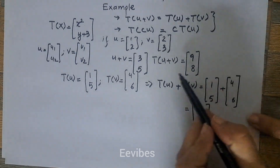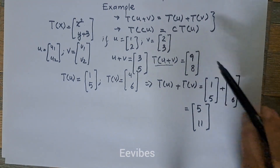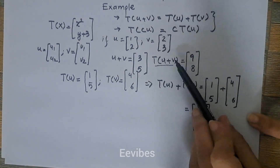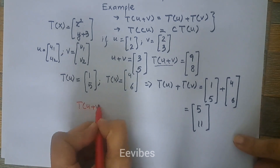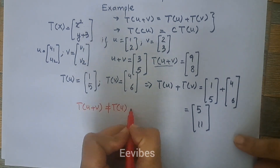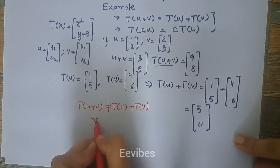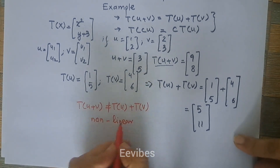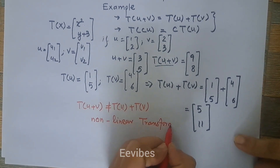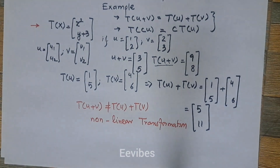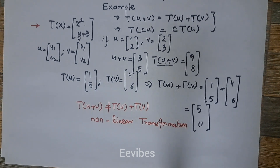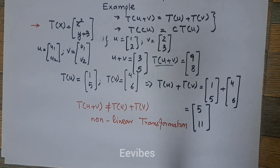Comparing the two results: the left-hand side gives (9, 8) while the right-hand side gives (5, 11). Therefore T(u+v) ≠ T(u) + T(v). This is an example of a non-linear transformation. Since the first property — the additivity property — doesn't hold, we don't even need to test the scalar multiplication property, because the transformation is already confirmed to be non-linear. If you have more questions, drop them in the comments, and don't forget to like and subscribe.